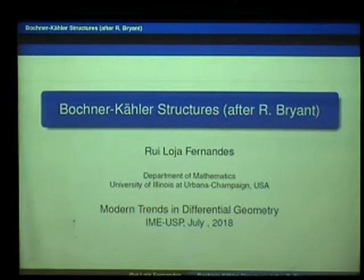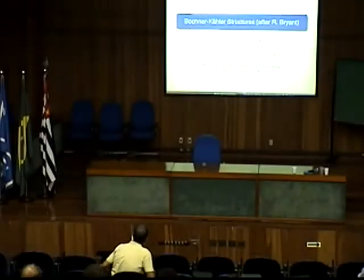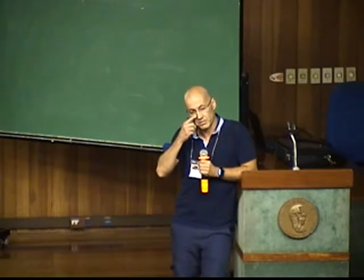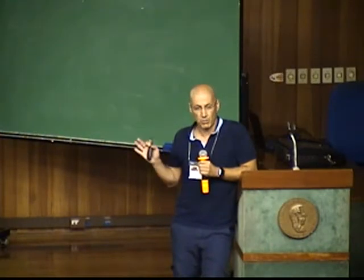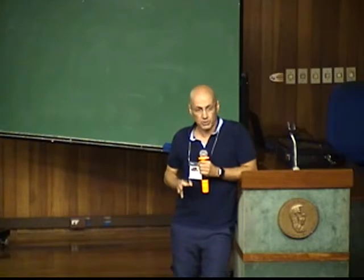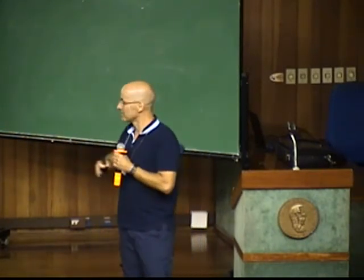As someone mentioned this morning, this was supposed to be more of an overview kind of talk. So what I'm going to try to do is a mixture of things. I'm going to try to tell you about some things that have been going on for the last 15-20 years in some kind of extended Lie theory, but in a concrete application to classification problems in differential geometry. Most of the time I'll be concentrating on the problem of classification of Bochner-Kähler metrics to illustrate these points of view.